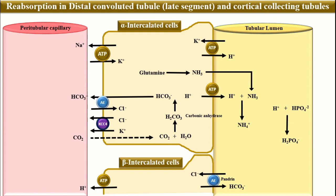Let's summarize. The alpha intercalated cells are important for the secretion of hydrogen ions, the acidification of the urine, and the reabsorption of new bicarbonate. The beta intercalated cells are important for the secretion of bicarbonate and the reabsorption of hydrogen ions. Both these cells are important to maintain acid-base balance inside the body.